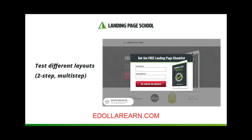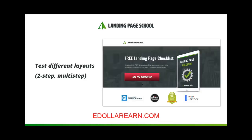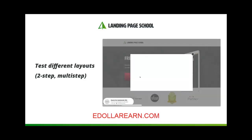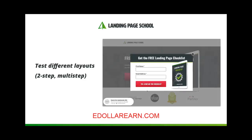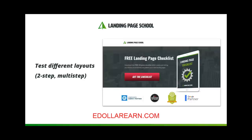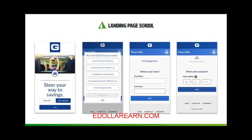This is backed up by a scientific principle called the Zeigarnik effect. If you'd like to learn more about it, I did an entire podcast episode on the Zeigarnik effect — check it out via the link below this video. Another thing to test is a multi-step form layout, as seen here by Geico. Instead of having all the questions on the first step, you can break things up over multiple steps and give people less to focus on at any given time. This is a very popular technique that can help boost your conversions, so give it a shot if you have a long form that causes people to drop off.